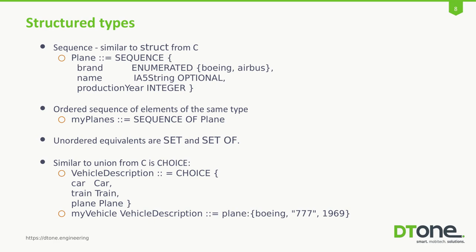There is also something similar to unions from C, called choice. You can think about it as a little bit of abstraction from object-oriented programming. Here, our vehicle description — my vehicle down there — can be any of car, train, or plane, which are all sequences. In this particular example, I've set my vehicle to be a plane, specifically a Boeing 777 produced in 69.